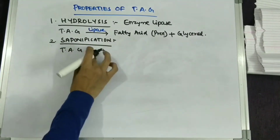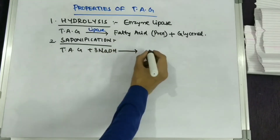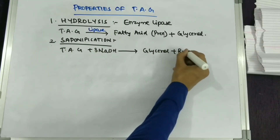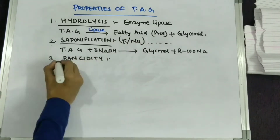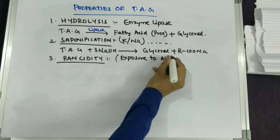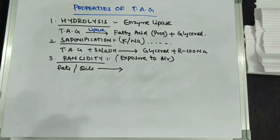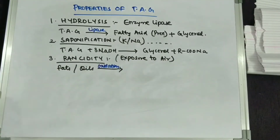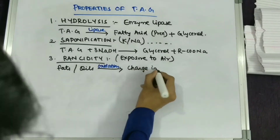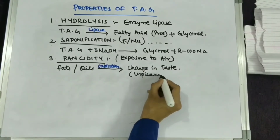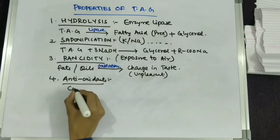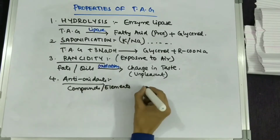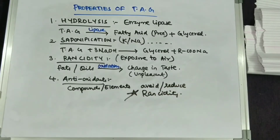The second property is saponification: triacylglycerol in the presence of sodium hydroxide gives glycerol and a salt of the acid. The third property is rancidity: on exposure to air, fats or oils undergo oxidation, which leads to a change in taste — an unpleasant taste in the fats and oils. Antioxidants are compounds or elements which prevent the fatty acid from undergoing oxidation.